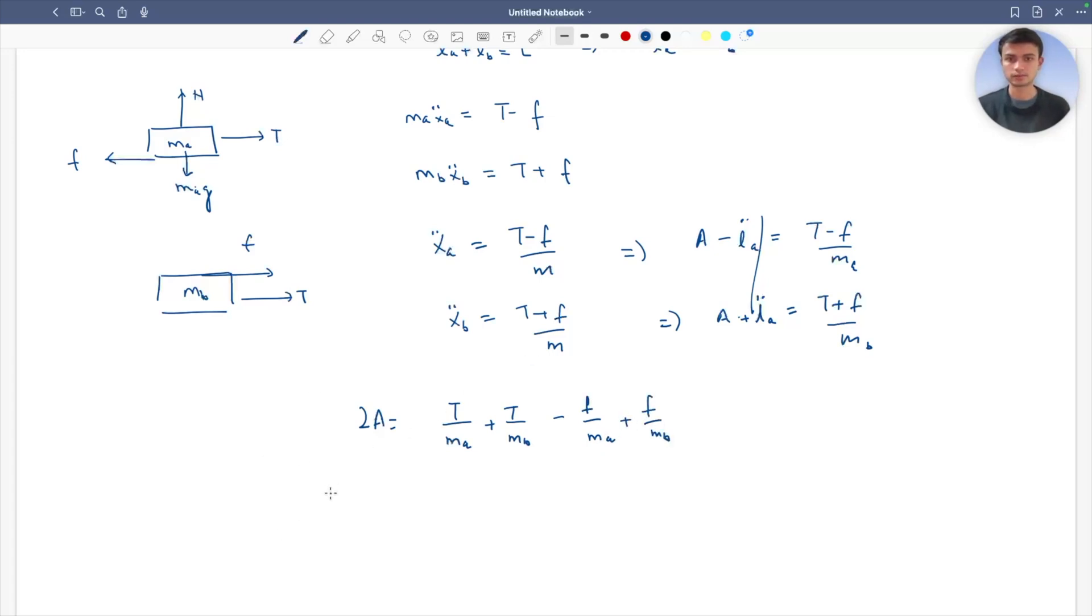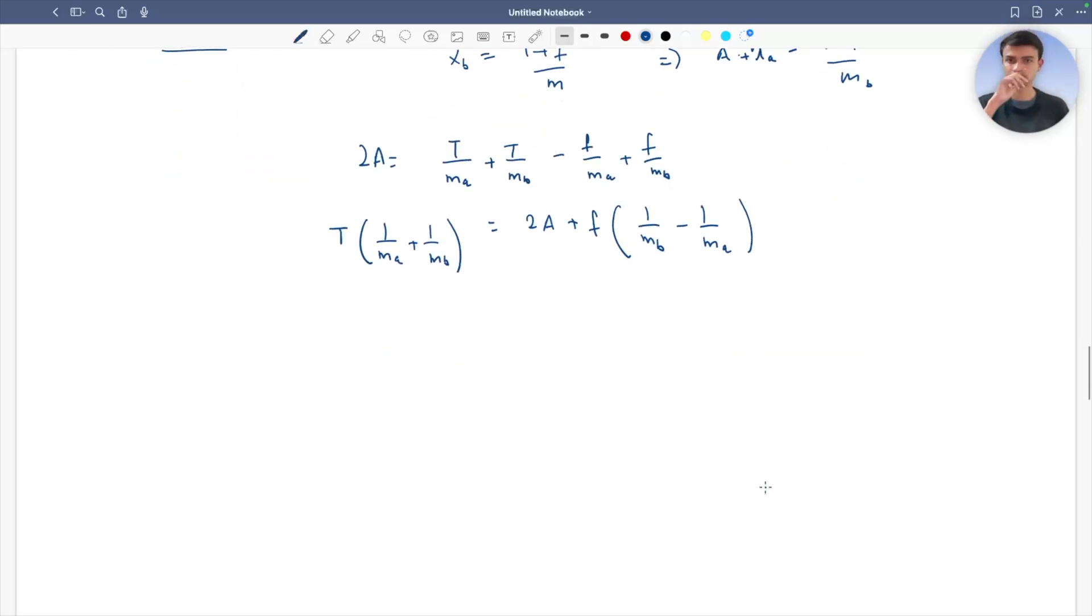What I need is tension, so tension times one over ma plus one over mb equals 2A plus f times one over mb minus one over ma. This becomes tension equals 2A ma mb over ma plus mb plus f times ma minus mb over ma mb.